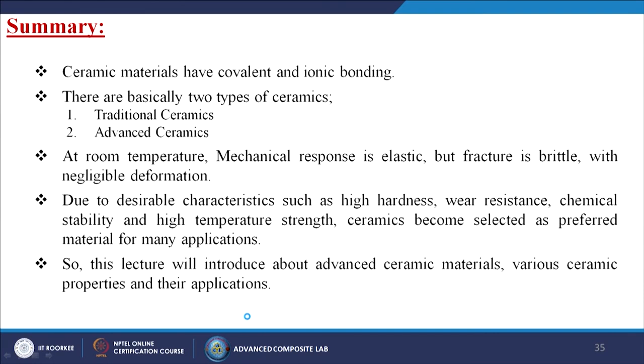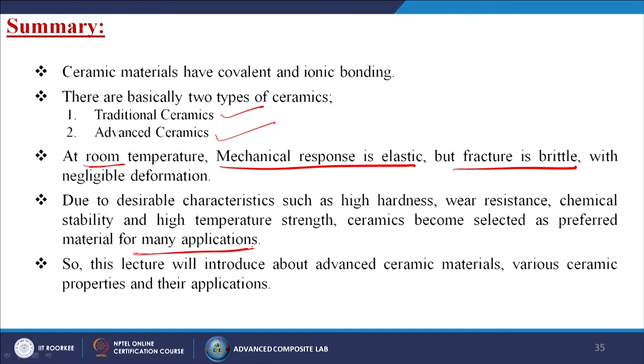In summary: ceramic materials have covalent and ionic bonding and do not have free electrons. There are basically two types — traditional ceramics and advanced ceramics. At room temperature, mechanical response is elastic but fracture is brittle with negligible deformation. Due to desirable characteristics such as high hardness, wear resistance, chemical stability, and high-temperature strength, ceramics are selected as preferred materials for many applications. This lecture has introduced advanced ceramic materials, various ceramic properties, and their applications.